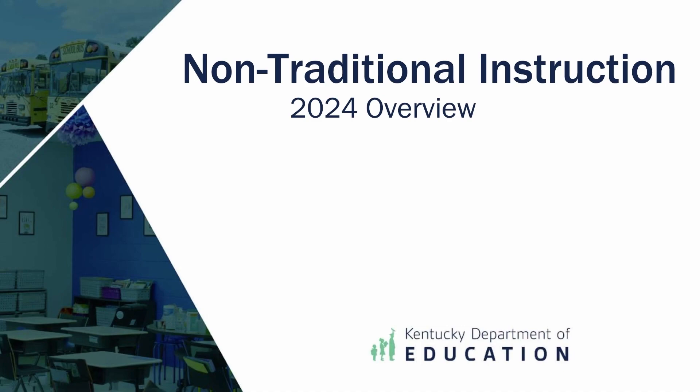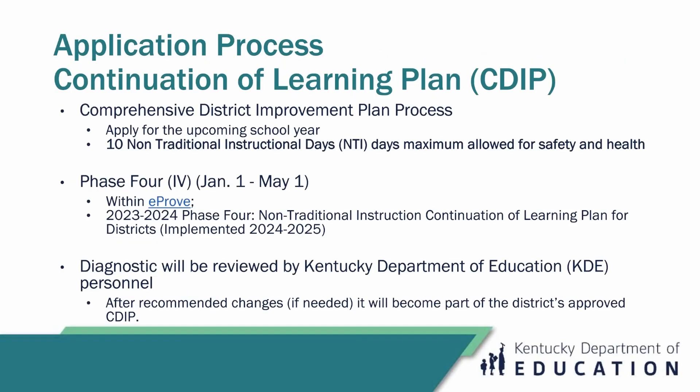When it comes to the 2024 non-traditional instruction overview, a lot of you have been used to processes that have been in place for a while. One of the newest changes is the application process. This is now all part of your continuation of learning plan within your CDIP — the comprehensive district improvement plan process. This allows you to apply for the upcoming school year. We have changed the wording so it will say non-traditional instruction plan and it should say implemented in the future year.